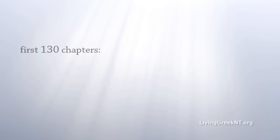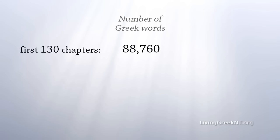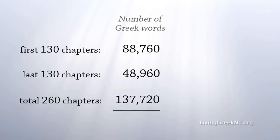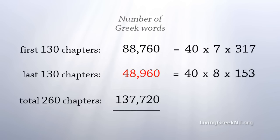Now, in the first 130 chapters there are 88,760 Greek words. In the last 130 chapters there are 48,960 Greek words. The total for the 260 chapters is 137,720. This is 40 times 7 times 317. This is 40 times 8 times 153. And this is 40 times 11 times 313.